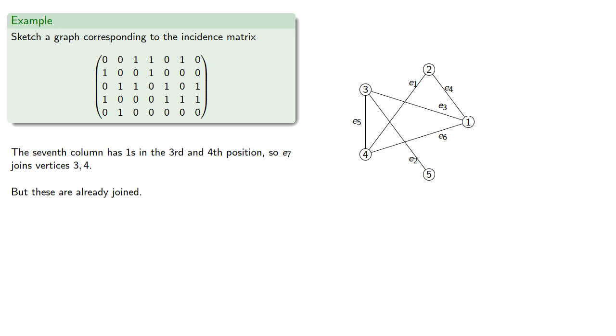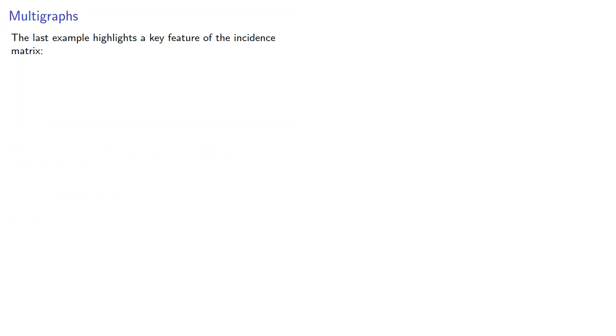But these are already joined, so this represents a second edge between the two vertices. The last example highlights a key feature of the incidence matrix. We can represent graphs with multiple edges easily.